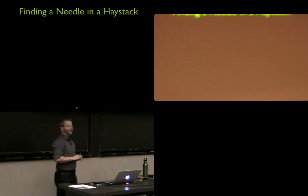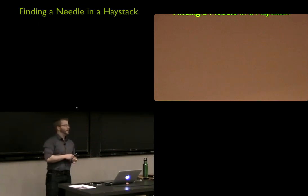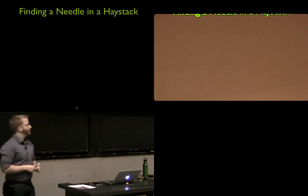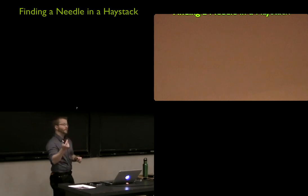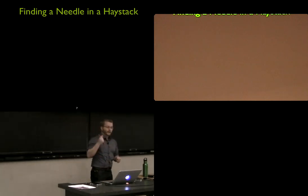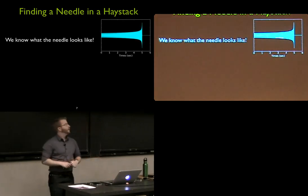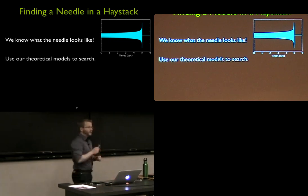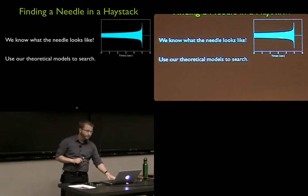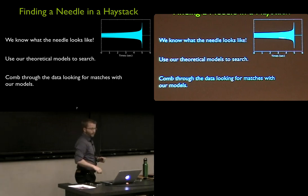Finding a needle in a haystack: I've talked about noise and shown you the signal. That signal is easy to hear when there's no noise, but when buried in our noise, it's like looking for a needle in a haystack — except for the first one, which was pretty surprising for all of us. We can take advantage of knowing what that needle looks like. We have this very telltale sign of a compact binary, this chirp waveform, and we can use this theoretical model to comb through our data and look for times where we see a good match with this chirp-like signal.